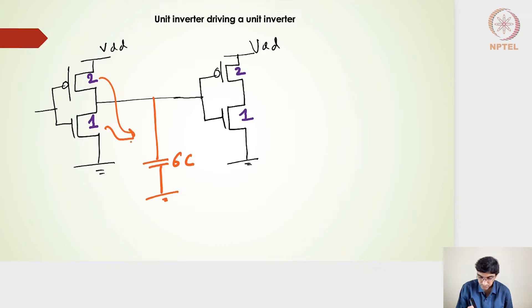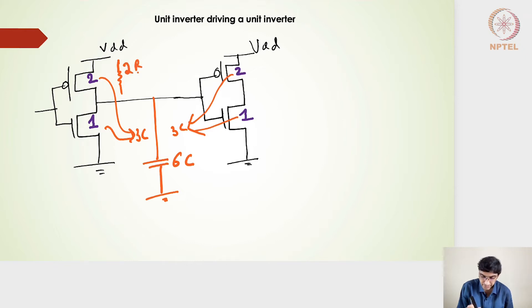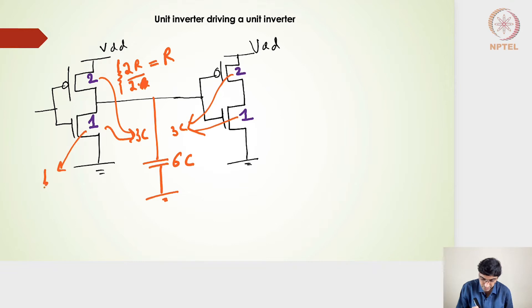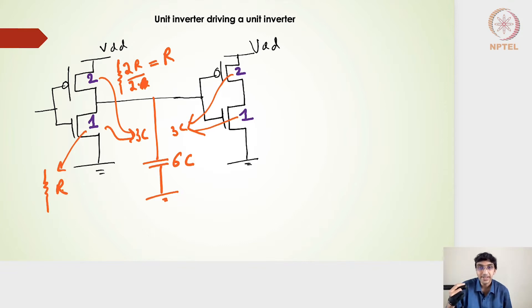The output stage contributes 3c and the input side also contributes 3c, giving a total capacitance of 6c. The switching resistance of the PMOS side is 2r/2 = r. On the NMOS side the switching resistance is r/1 = r. For the PMOS, mobility of holes is half that of electrons so the resistance is 2r, and since the width is twice (2w), we get 2r/2 = r. Both PMOS and NMOS switching resistances for the unit inverter are therefore r.